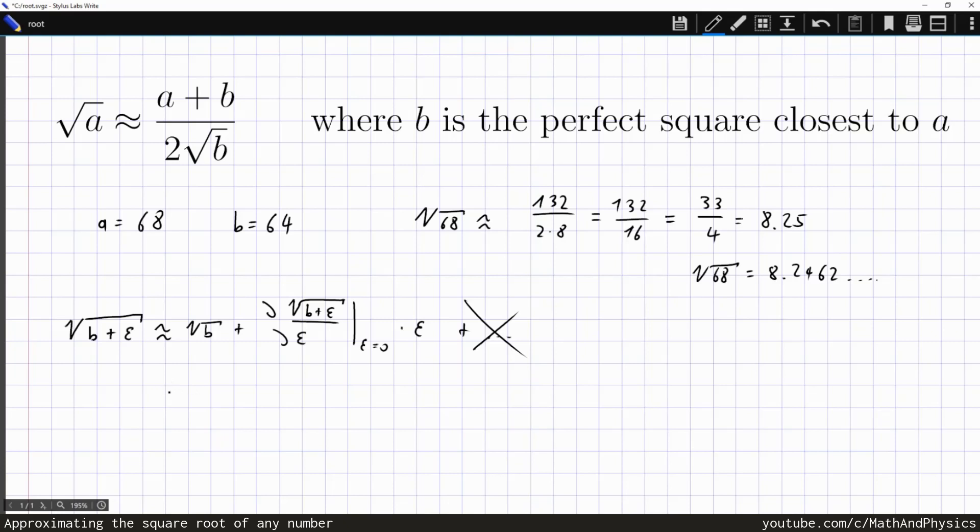Computing this gives square root of b plus, and the derivative here is 1 over 2, and then we would get the square root of b plus epsilon, but then we decide to evaluate that at epsilon equals 0. So all that's left is square root of b times epsilon.